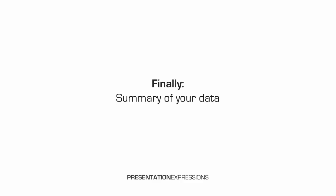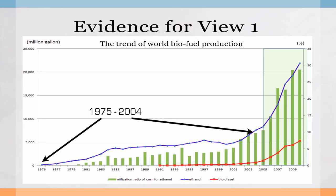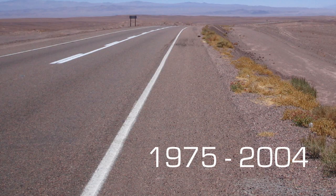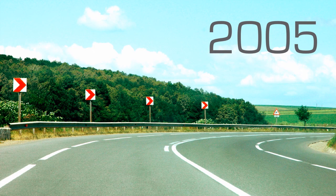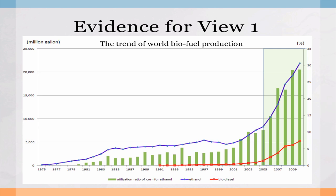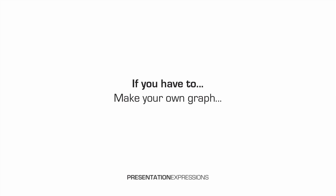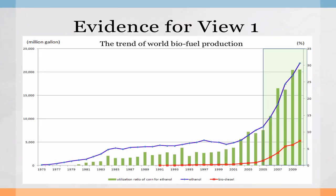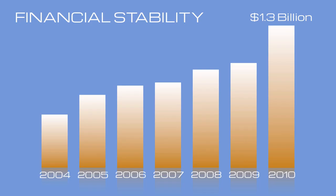Finally, you want to summarize all of the data. There are really two things to summarize: from 1975 to 2004, everything was going along a smooth road, and then in 2005 you hit a really steep curve and the production exploded. The reason this person wanted to mention this was because of record high oil prices — view number one was because of record high oil prices. And if you really need a graph, make your own. Use any kind of background — color is better because it looks more visually appealing.